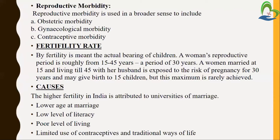As an example, if a woman gets married at age 15 and lives till 45, she lives with her husband for a total of 30 years of reproductive risk, and in those 30 years she may give birth to 15 children. But this rarely occurs because the risk of maternal death is highest in multiparous mothers, so no one would take this kind of risk. This is just an example to understand fertility rate.